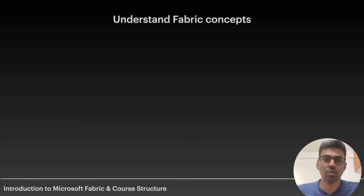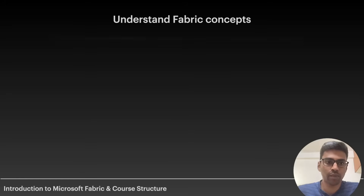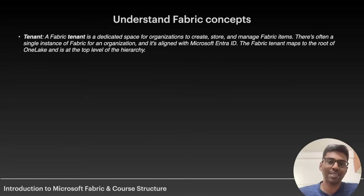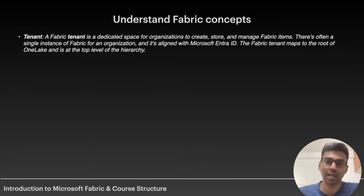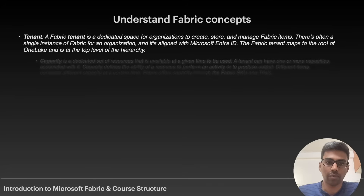Let's understand some key Fabric concepts — tenant, capacities, domain, and workspace. A Fabric tenant is a dedicated space for organizations to create, store, and manage Fabric items. There is often a single instance of Fabric for an organization, and it is aligned with Microsoft Entra ID — previously Azure AD. The Fabric tenant maps to the root of OneLake and is at the top level of the hierarchy.